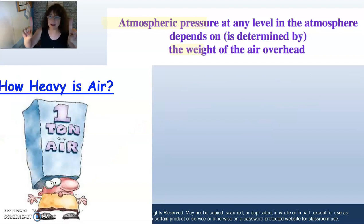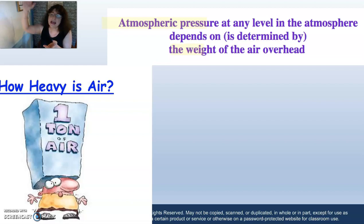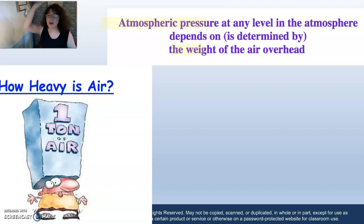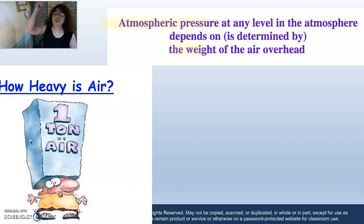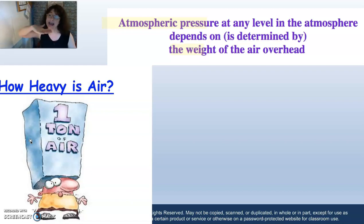Key point to remember: atmospheric pressure at any level in the atmosphere — sea level, Denver level, Mount Everest level — depends on the weight of the air overhead and area. Think of the weight of the air in that one-foot by one-foot space on top of your head. At sea level that's one ton of air. At Mount Everest, it's roughly 1,000 pounds of air — about half — because at Mount Everest, 50% of the pressure is above you relative to sea level. Atmospheric pressure at any level depends on the weight of the air overhead pressing down.